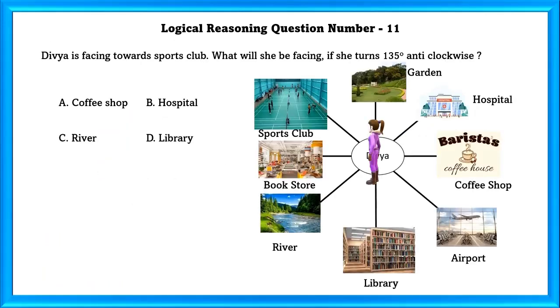Logical Reasoning Question Number 11: Divya is facing towards the sports club. What will she be facing if she turns 135 degrees anti-clockwise? If Divya turns 135 degrees anti-clockwise, she will be facing the library. So our answer is D, library.